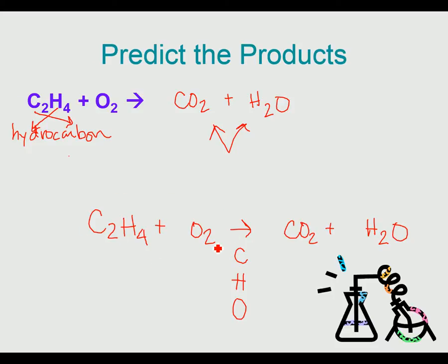On the left side, on the reactant side, there are two carbons, four hydrogens, and two oxygens. On my product side, I see one carbon, two hydrogens, and two plus one oxygen—that would be three oxygens.